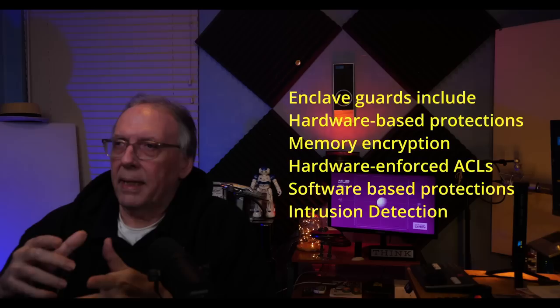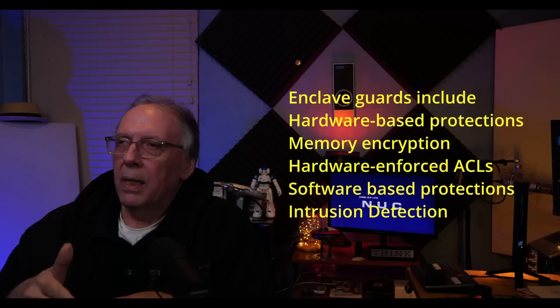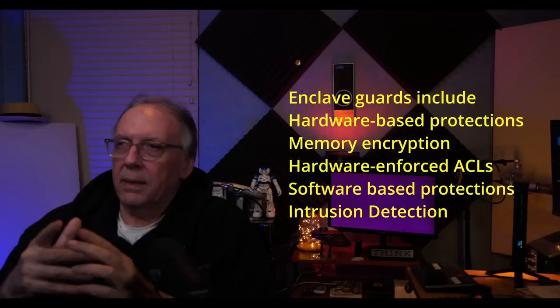The specific implementations of an enclave guard depend on the type of security enclave and the security requirements of the system it's protecting. Some common types of enclave guards include hardware-based protections — you might encrypt memory or have hardware-enforced access controls — as well as software-based protections such as authentication and authorization mechanisms, and intrusion detection systems. The primary goal of an enclave guard is to ensure that only authorized users or applications are able to access or modify sensitive information within the security enclave. In other words, the data stays there and doesn't move unless permitted by the rules and policies you put into play.